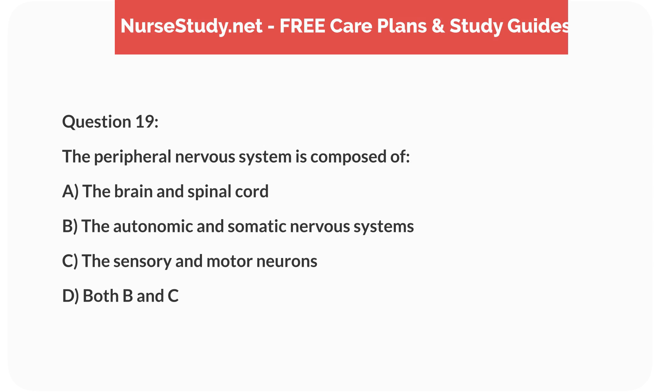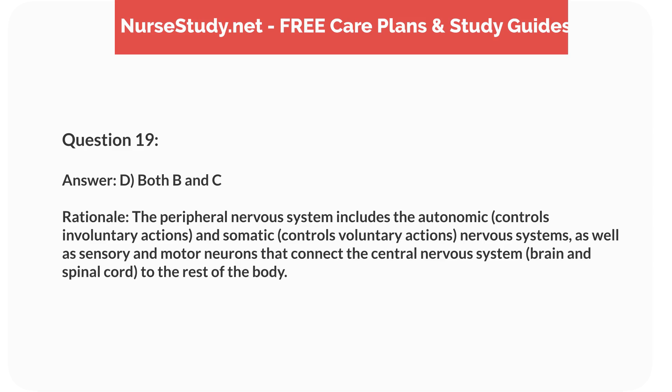Question 19: The peripheral nervous system is composed of A) the brain and spinal cord, B) the autonomic and somatic nervous systems, C) the sensory and motor neurons, D) both B and C. Answer: D, both B and C. Rationale: The peripheral nervous system includes the autonomic (controls involuntary actions) and somatic (controls voluntary actions) nervous systems, as well as sensory and motor neurons that connect the central nervous system to the rest of the body.